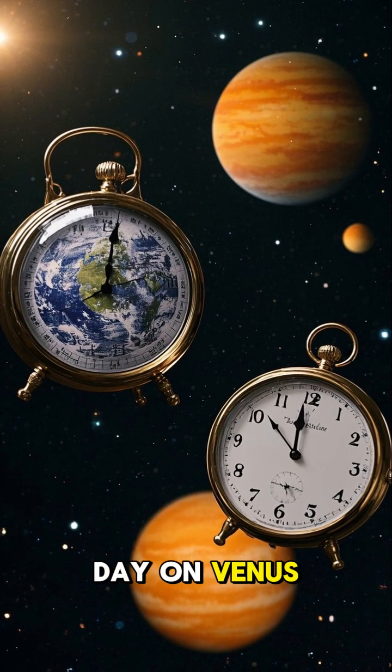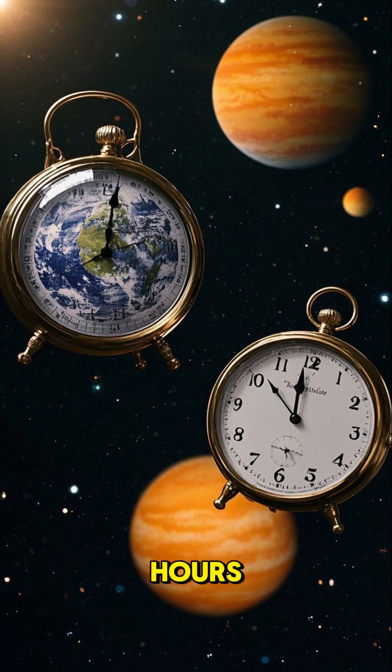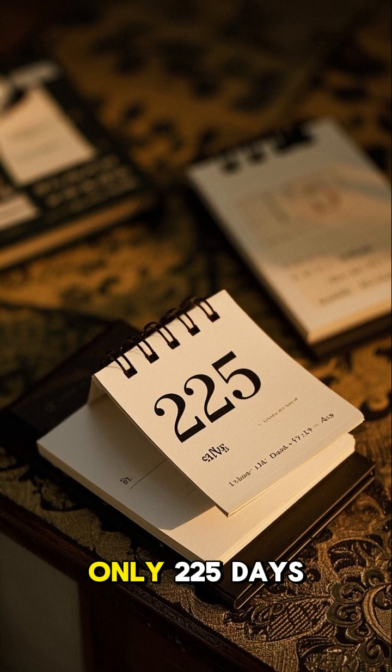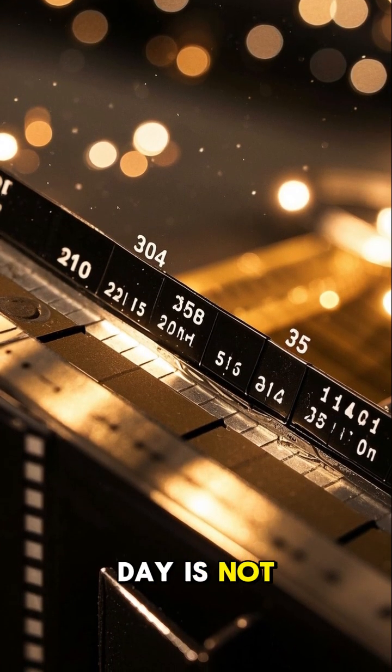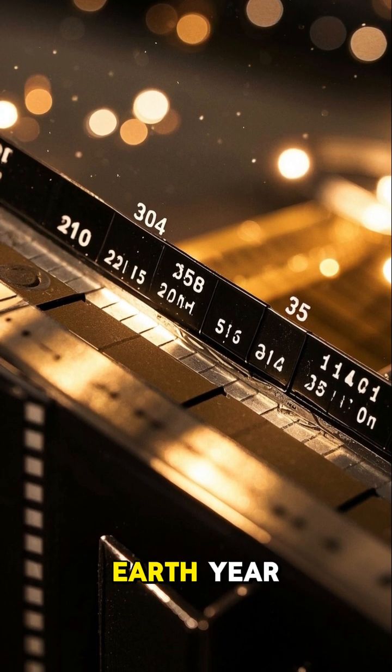This means that a day on Venus is longer than a day on Earth by almost eight hours. Number three, the length of a Venusian year is only 225 days. So a Venusian day is not only longer than an Earth day, but it's also longer than an Earth year.